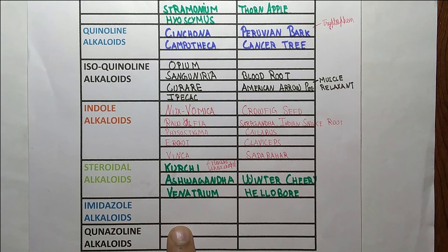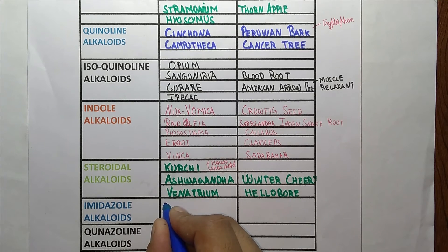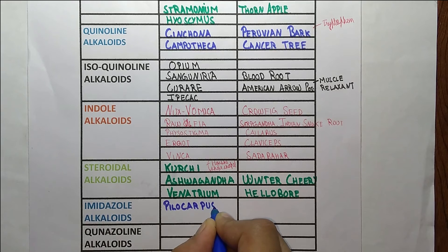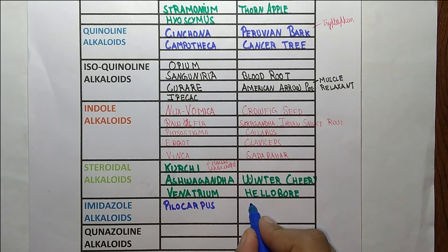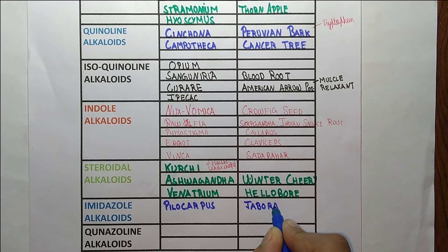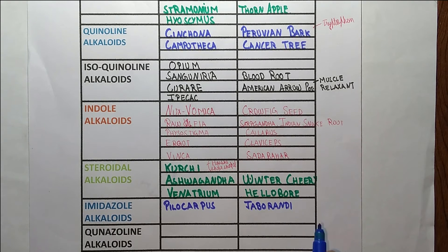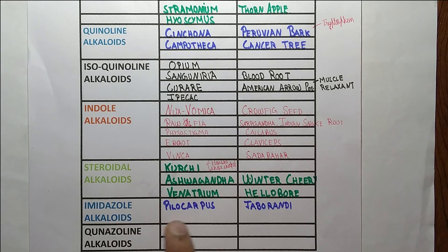Coming to imidazole alkaloids — there is a single drug in this category, which is pilocarpus. Its synonym is 'jaborandi.' So pilocarpus is the only drug in imidazole alkaloids.